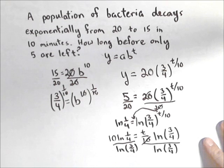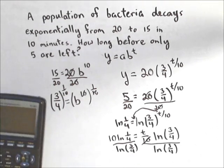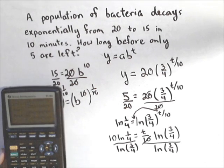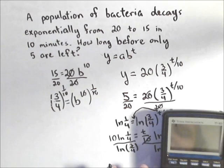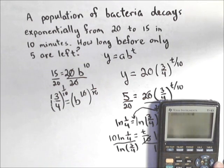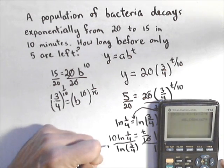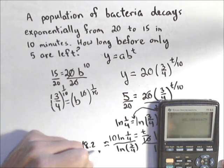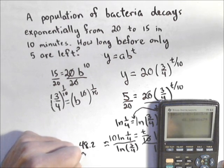And I've got how long. Now, typically we're not gonna leave an answer like this just because who wants to hear that's how long something's gonna take. Let's get it into a number that we can work with. So I would put this in as 10 natural log of 1 fourth divided by natural log of 3 divided by 4. And it's gonna take about 48.2 minutes.